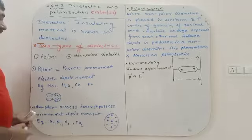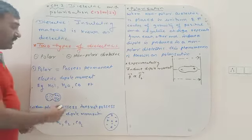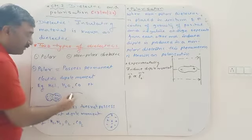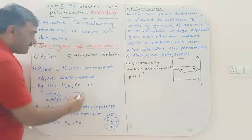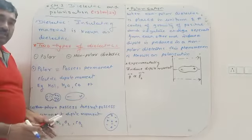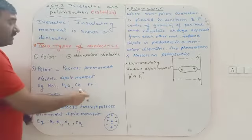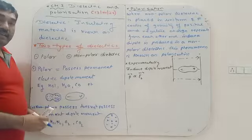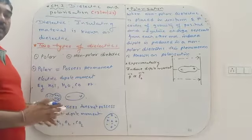In polar dielectrics, the centers of gravity of the negative and positive charges are separated from each other — on one side we have the group of negative charges and on the other side the group of positive charges.